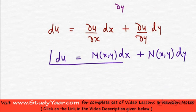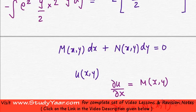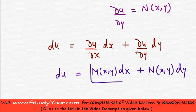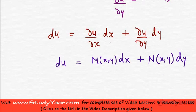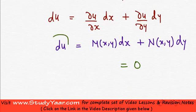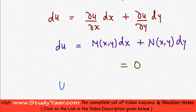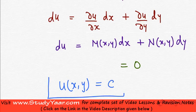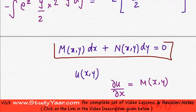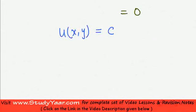Since the original equation is given as 0, and du equals that expression, we have du = 0. Therefore, the derivative of u is zero, which means u is a constant. So u(x,y) = constant is called the solution of this differential equation — specifically, it is called an implicit solution.